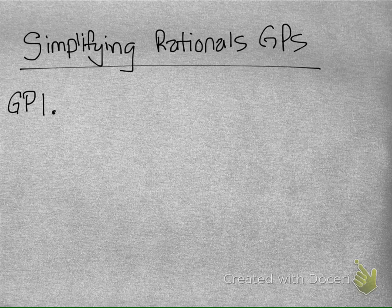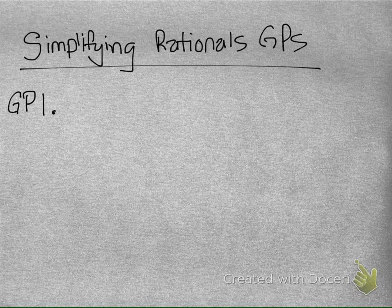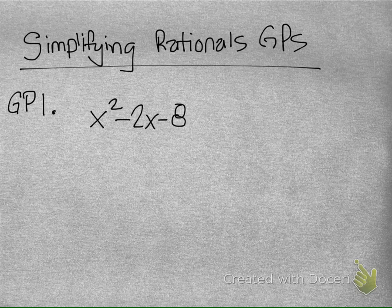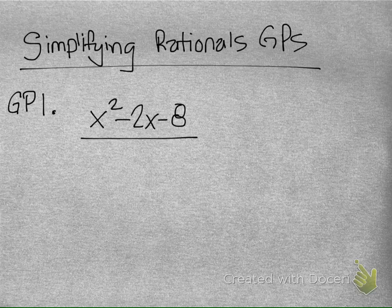Here's GP number 1. What I would like you to do is copy the problem down, then hit pause on the video and try to simplify the expression on your own. This is GP number 1: x squared minus 2x minus 8, which is a trinomial, divided by x minus 4.